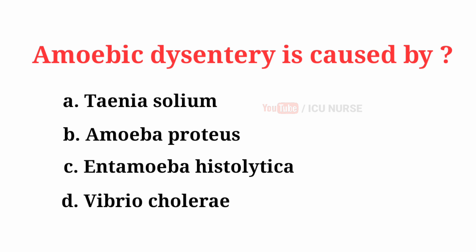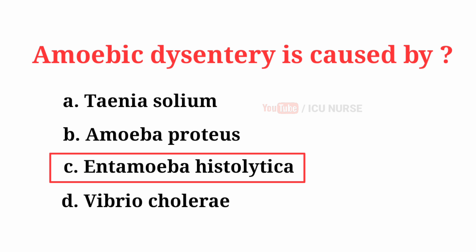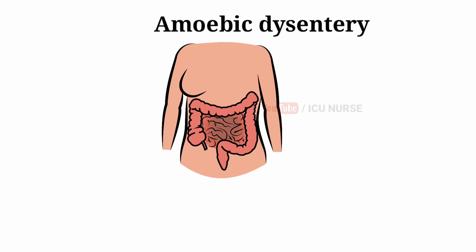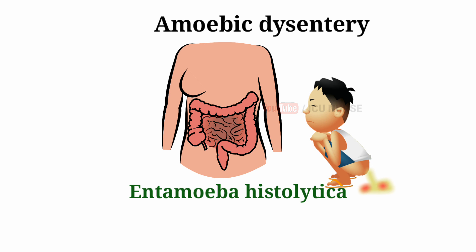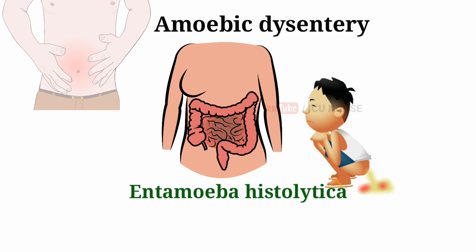Amoebic dysentery is caused by... Amoebic dysentery is an infection of the intestine caused by the amoeba Entamoeba histolytica, which among other things can cause severe diarrhea with blood. It may cause milder chronic symptoms of frequent loose stools and abdominal pain.